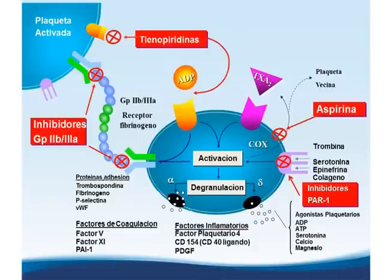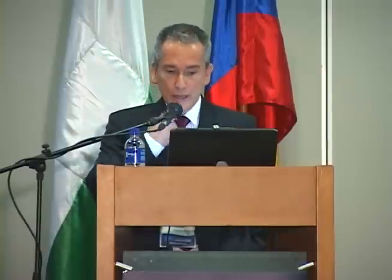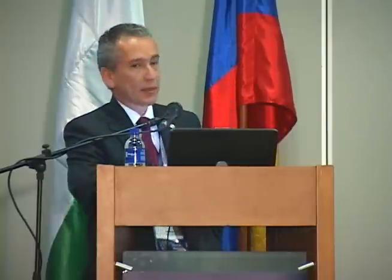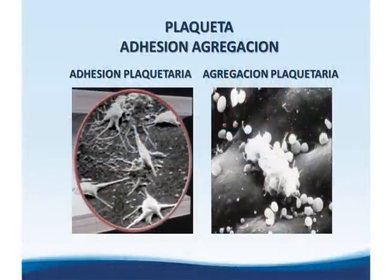Esa cantidad de receptores y agonistas de la plaqueta nos ha llevado a bloquearlos: bloqueamos el tromboxano con aspirina, el receptor de ADP con tienopiridinas, el receptor de glicoproteína 2B3A para que no se una el fibrinógeno con los inhibidores GP2B3A. Uno de los medicamentos nuevos en estudio son los inhibidores del receptor PAR1, receptores de la trombina, de los que todavía no sabemos su beneficio adicional al combinarse con aspirina, clopidogrel u otros bloqueadores en síndromes coronarios agudos.